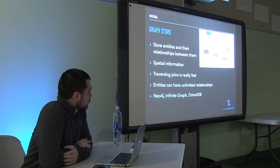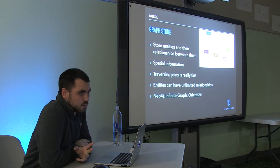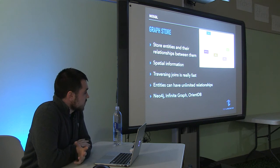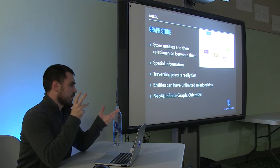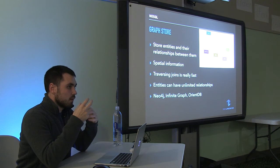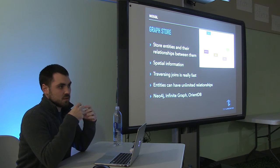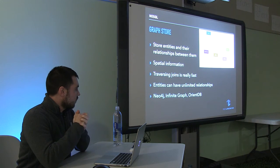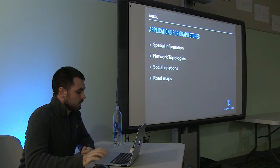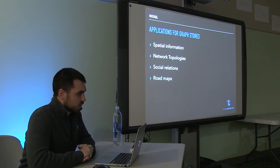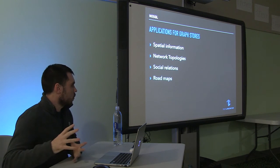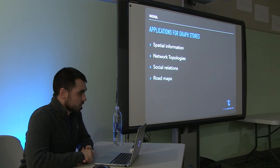Last, we have graph stores. This is more spatial, multi-dimensional information. You can store entities and the relationships between them. The interesting thing is entities can have as many relationships as they want, so traversing relationships is super fast — you can get right to the data you need very quickly. Big players include Neo4j, Infinite Graph, and OrientDB. Google Maps runs off this spatial kind of storage. You can store things not easily transcribable to a one-dimensional data structure, like social relationships and network topologies.